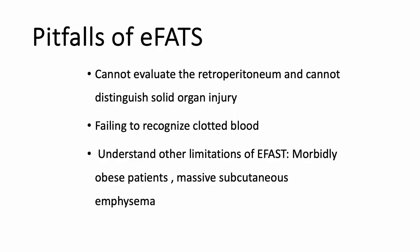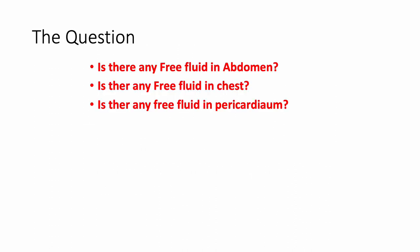Pitfalls of the eFAST: you cannot evaluate the retroperitoneal space, you cannot distinguish solid organ injury, and you will fail to recognize clotted blood. Difficulties arise if the patient is morbidly obese or has massive subcutaneous emphysema, as you will not be able to penetrate for assessment. In summary, the eFAST scan asks three questions: is there any free fluid in the abdomen? Is there any free fluid in the chest? Is there any free fluid in the pericardium?